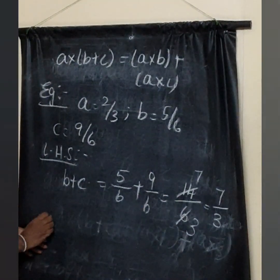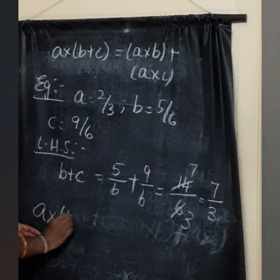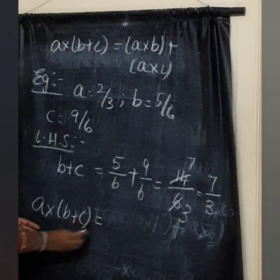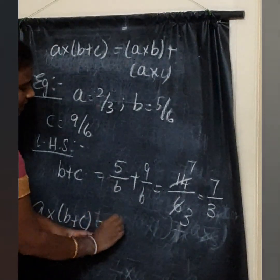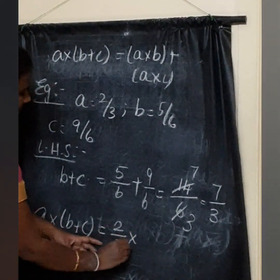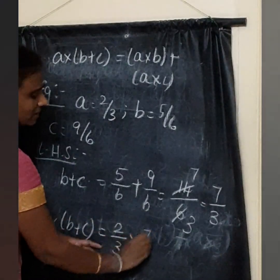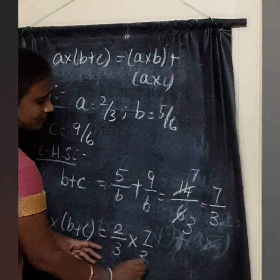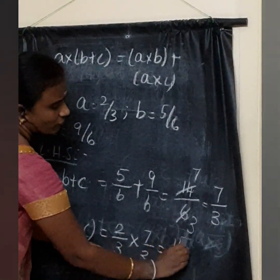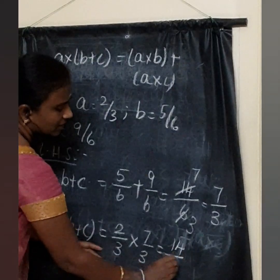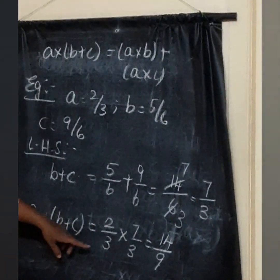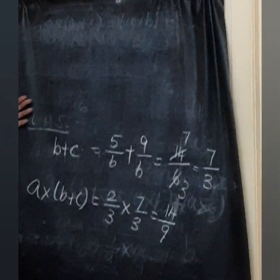Now A into B plus C: A is 2 by 3 and B plus C is 7 by 3. So 2 by 3 into 7 by 3 gives 2 times 7 equals 14 in the numerator and 3 times 3 equals 9 in the denominator, giving 14 by 9.